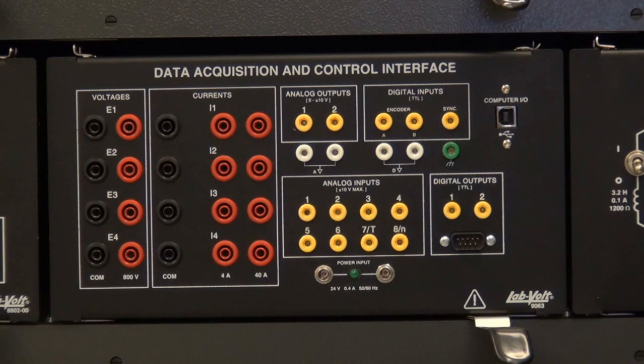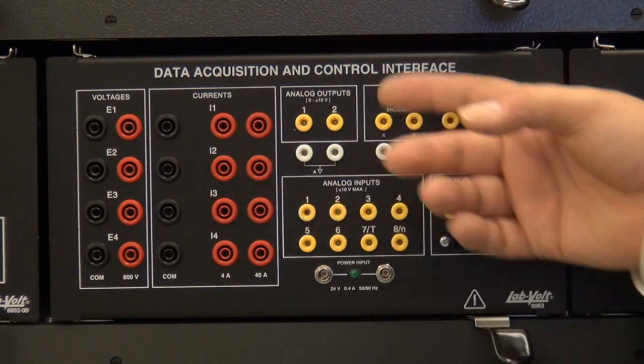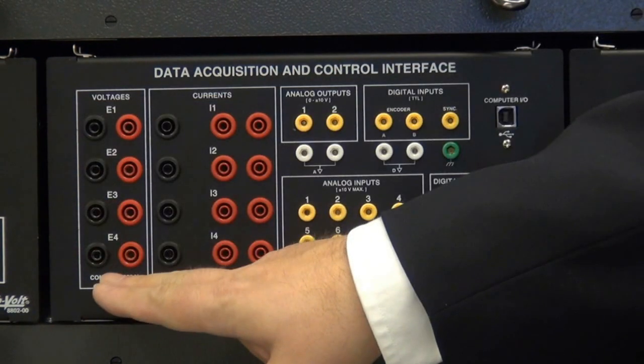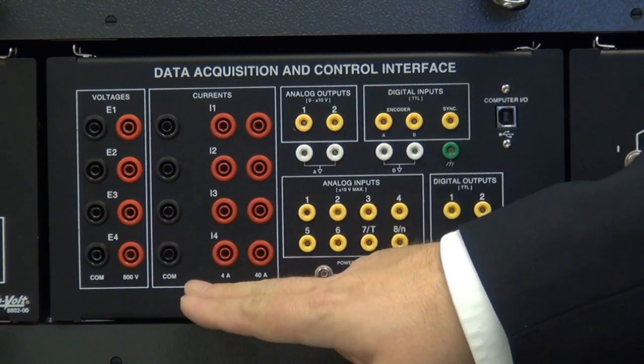To get measurements that are easy to understand and to connect, we use a data acquisition and control interface which has 4 voltage inputs as well as 4 current inputs.